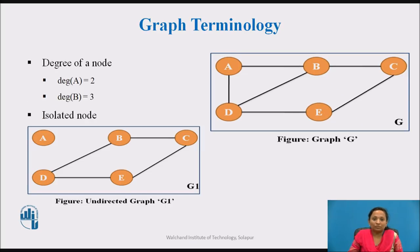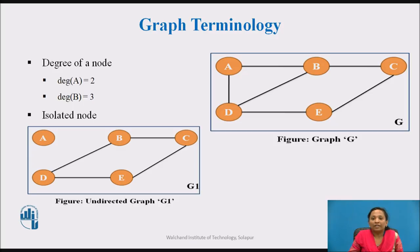Degree of a node is the total number of edges containing that particular node. In graph G, degree of node A is 2 and degree of node B is 3. If degree of a node A is equal to 0, it means that A does not belong to any edge, and such a node is known as an isolated node, as shown in graph G1.